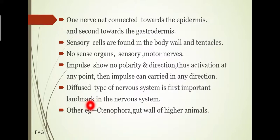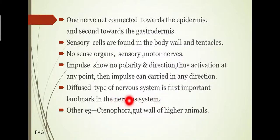This diffused type of nervous system is the first important landmark in the evolution of the nervous system. Other examples of this type include phylum ctenophora and the gut wall of higher animals.